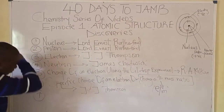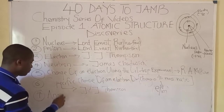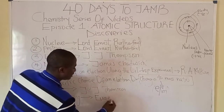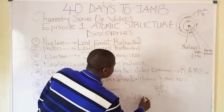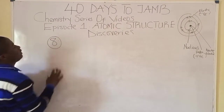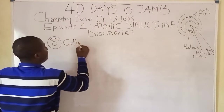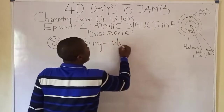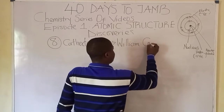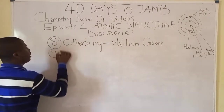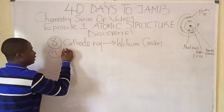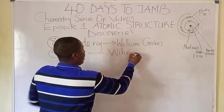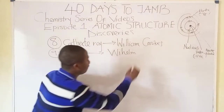Canal rays were discovered by Eugene Goldstein. The cathode ray was discovered by William Crookes. X-rays were discovered by Wilhelm Röntgen.